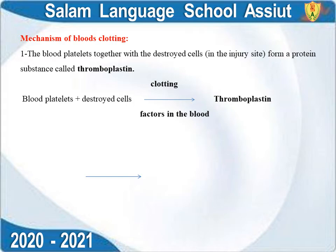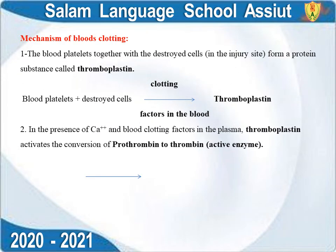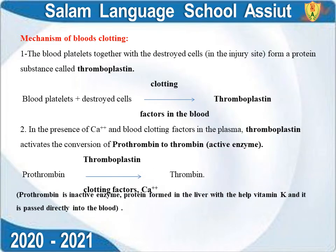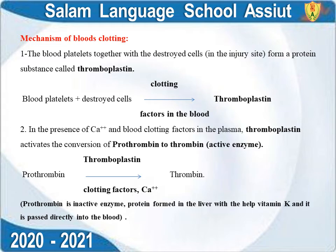Mechanism of blood clotting occurs in three stages. First, blood platelets together with destroyed cells at the injury site produce a protein called thromboplastin. Second, thromboplastin in the presence of calcium and blood clotting factors in the plasma converts prothrombin to thrombin, an active enzyme. Prothrombin is produced by the liver with the help of vitamin K and passed directly to the blood.